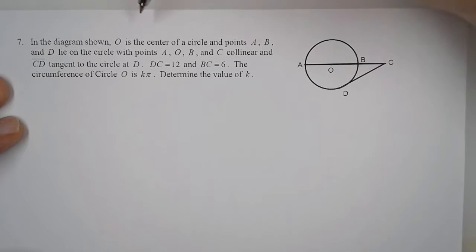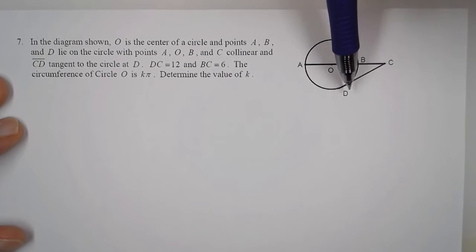In this problem, O is the center of a circle, and points A, B, and D lie on the circle. Points A, O, B, and C are collinear, and CD is tangent to the circle at point D.